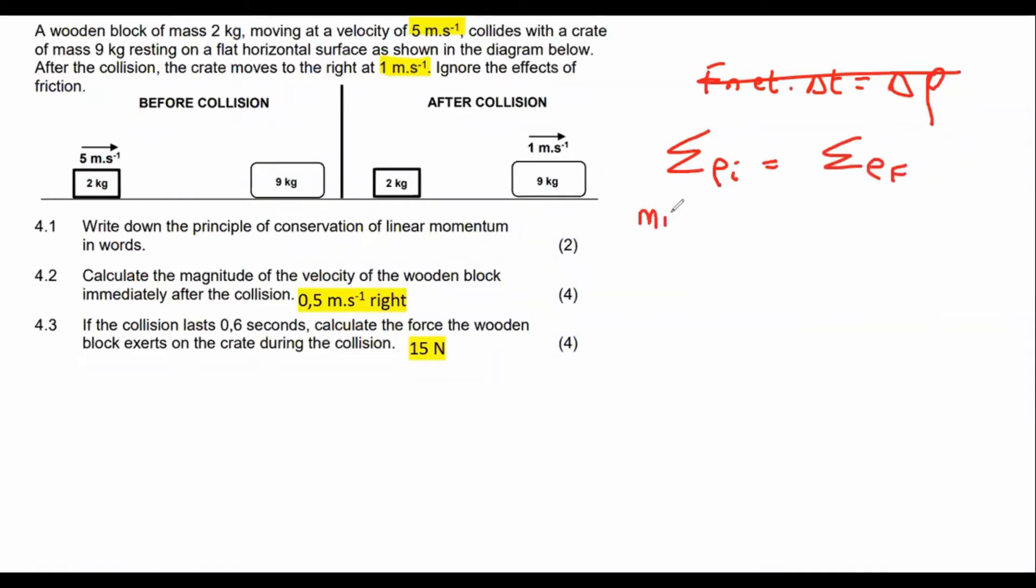And then you're just going to go M1V1 initial plus M2V2 initial equals M1V1 final plus M2V2 final. Easy as that. You then choose a direction. We say right is positive, for example, and we just go plug everything in.